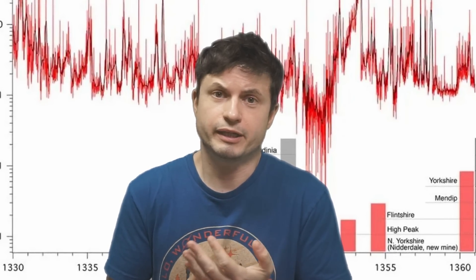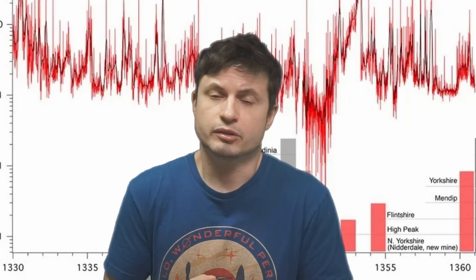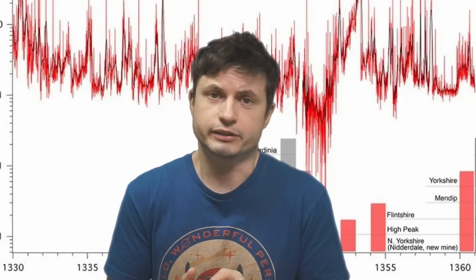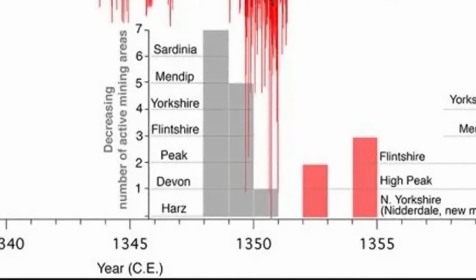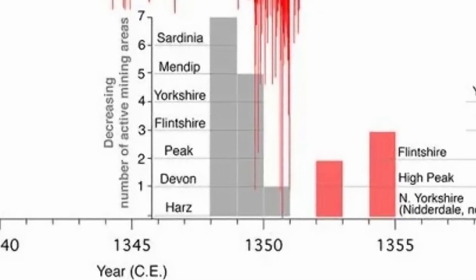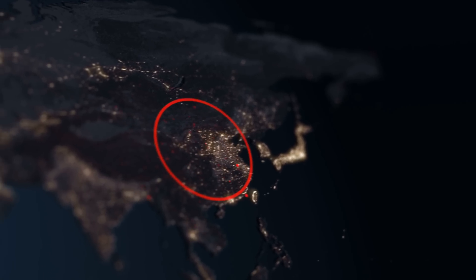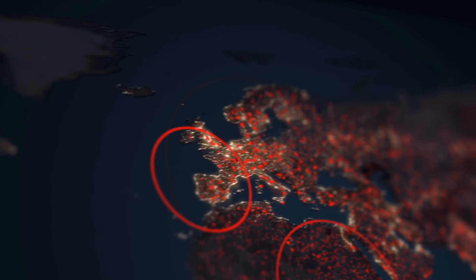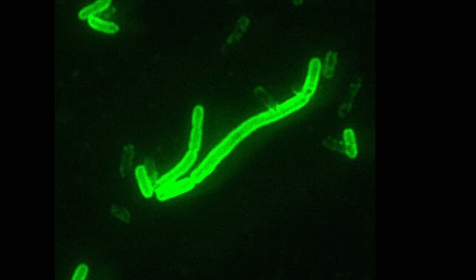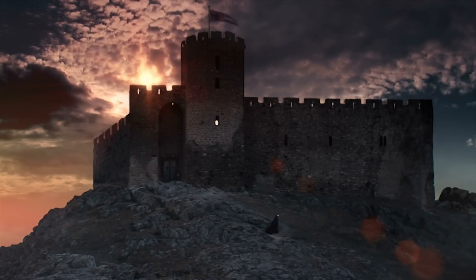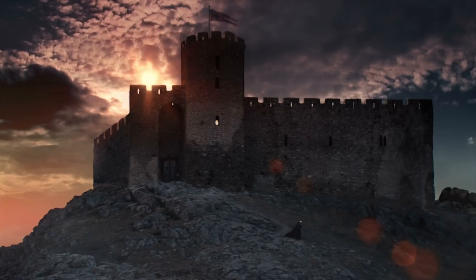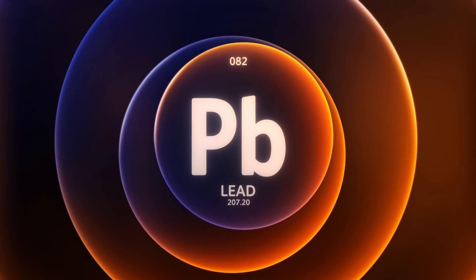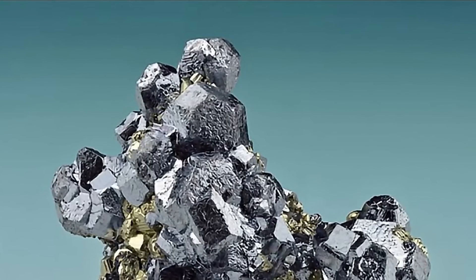Intriguingly, something similar happened in more recent times during the introduction of unleaded fuels in the 1980s, but in this case the dip was approximately 10 times more. Though at first it wasn't clear exactly what happened, this particular date directly coincides with one of the major events in Europe around this time, today simply referred to as the Black Death — the bubonic plague pandemic between 1346 and 1353, caused by the bacterium Yersinia pestis, that potentially wiped out 50% of the European population, killing over 50 million people. But why lead?